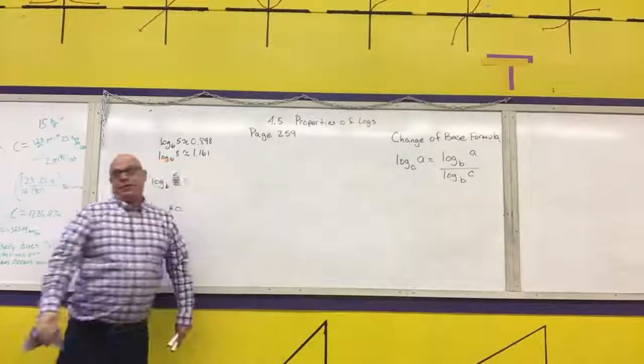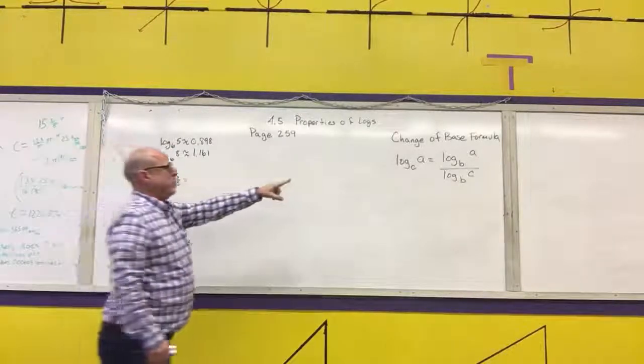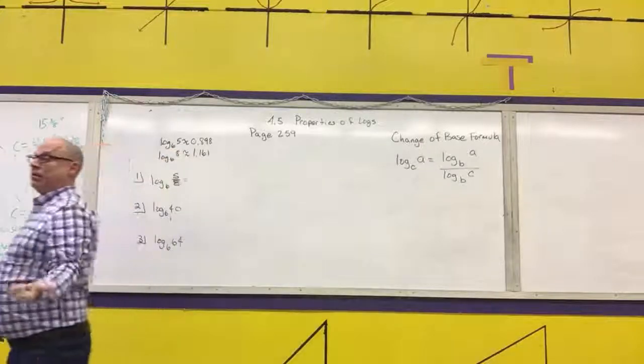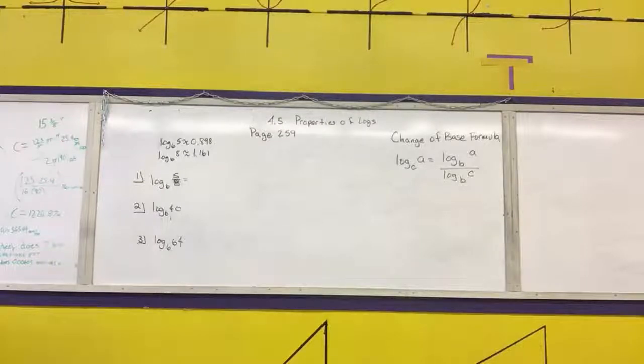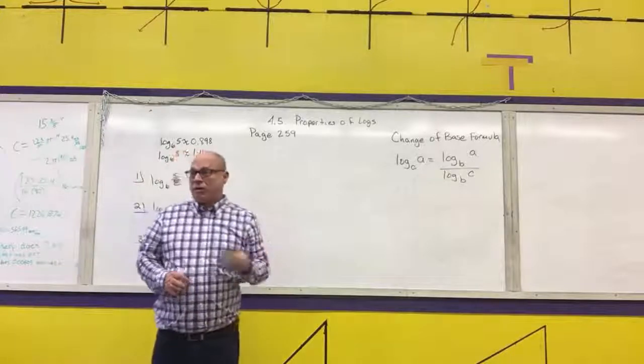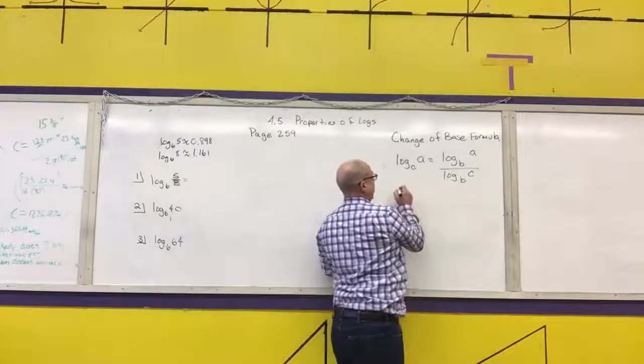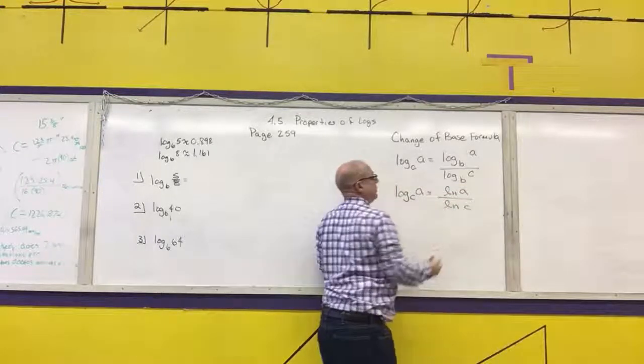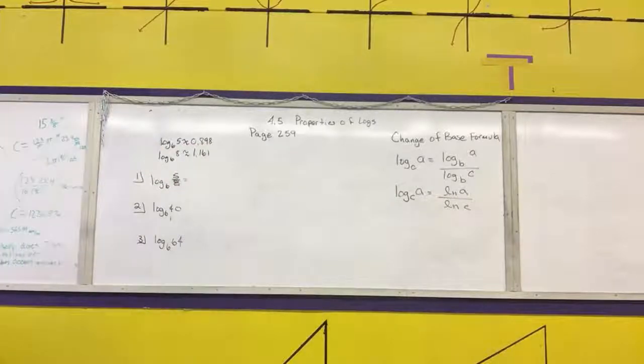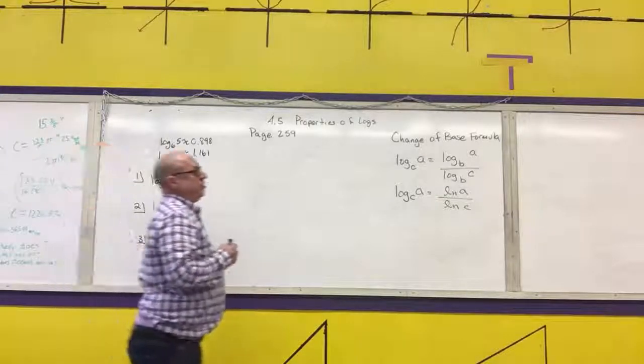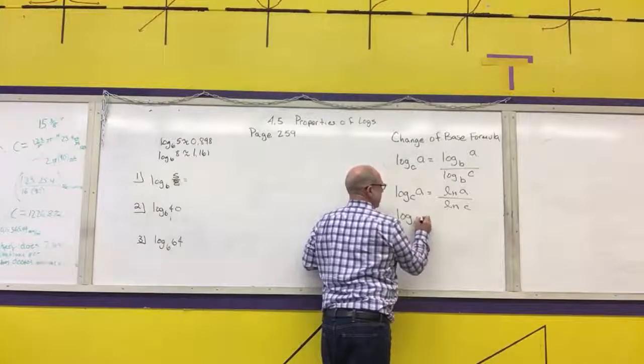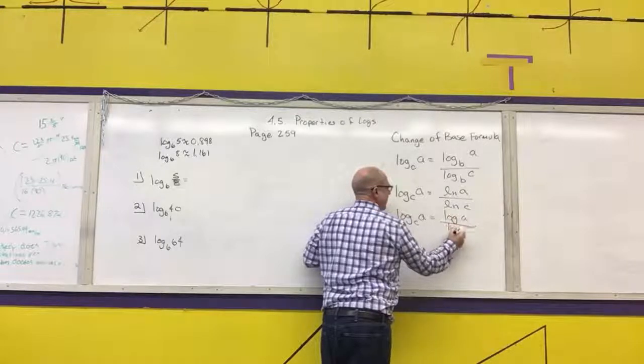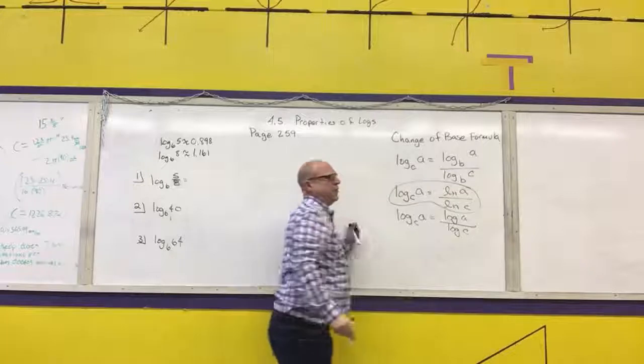Our B is going to be one of two things. It's either going to be a 10 or it's going to be an E. Because you only have two buttons on your calculators to do log bases of, correct? You have the log, which is log base 10, and you have the natural log, which is log base E. So, log base C of A is equal to natural log of A over natural log of C. My recommendation is that you always use the change of base formulas with natural logs, because any class beyond this, you're going to be using natural logarithms somewhere further in the problem.